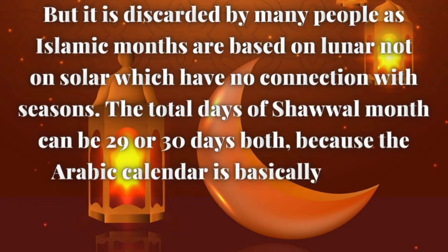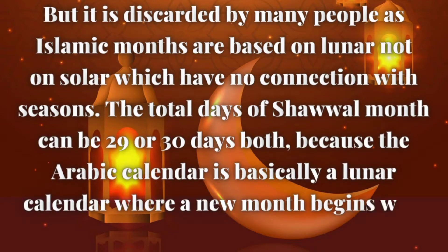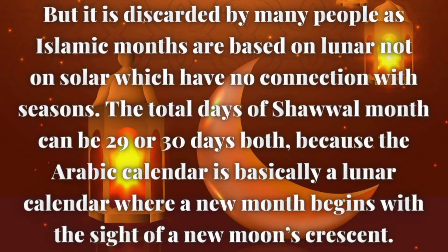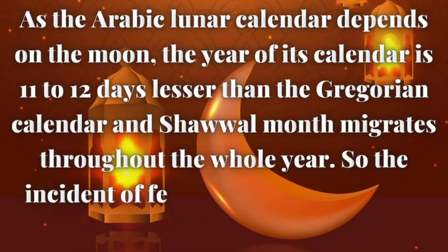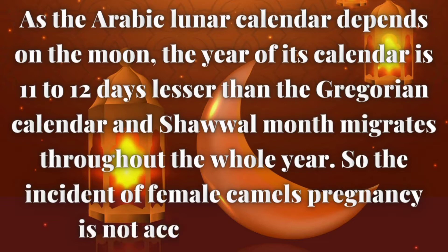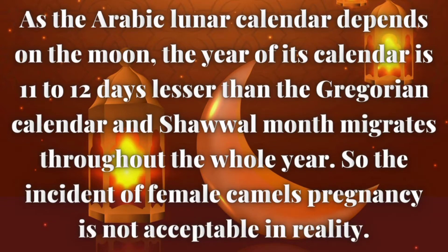However, this interpretation is discouraged by many people, as Islamic months are based on the lunar calendar, not the solar calendar, which has no connection with seasons. The total days of Shawwal month can be 29 or 30 days, because the Arabic calendar is a lunar calendar where a new month begins with the sighting of the new moon's crescent. Since the Arabic lunar calendar depends on the moon, its year is 11 to 12 days shorter than the Gregorian calendar, and Shawwal month migrates throughout the whole year, so the connection to female camel pregnancy is not acceptable in reality.